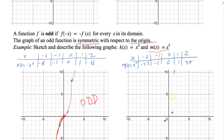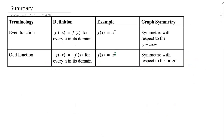Likewise, for m of x equal to x to the fifth power, it's symmetric about the origin, so it's an odd function. In summary: an even function satisfies f of negative x equals f of x for every x in the domain — example f of x equals x squared, symmetric about the y-axis. An odd function satisfies f of negative x equals negative f of x — example f of x equals x cubed, symmetric about the origin.